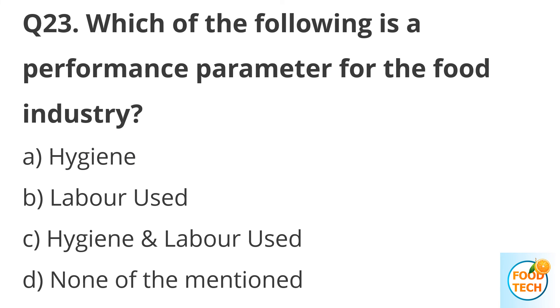Question 23. Which of the following is a performance parameter for the food industry? A. Hygiene. B. Labor use. C. Hygiene and labor use. D. None of the mentioned.